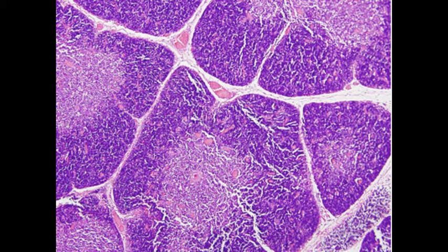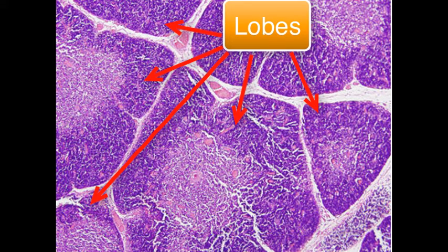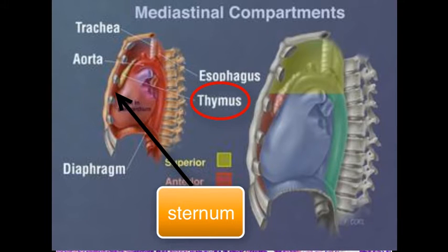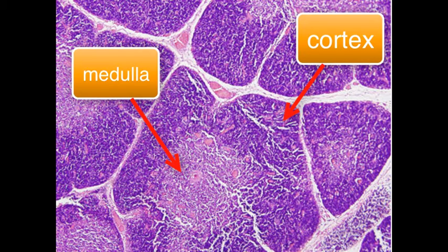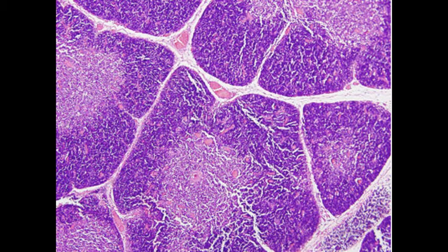So what is thymus? Thymus is actually a multi-lobulated structure that is situated behind your sternum, approximately at the level of second vertebra. These lobules have a cortex, which is its outer part, as you see in this histological picture, it's more darkened, and its medulla, the inner part. And the maturation occurs from the cortical part towards the medullary part.